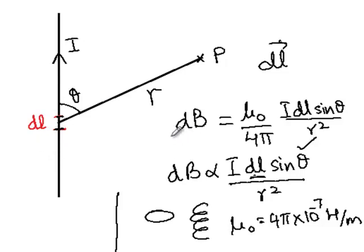Another thing is the expression for dB in this form only gives us the magnitude of the magnetic field, but it doesn't give us the direction of the magnetic field. So what we are going to do is we are going to write it as a cross product and that will give us the direction of the magnetic field. Let's just write this.